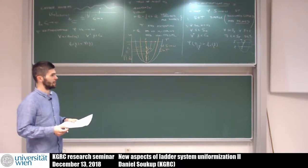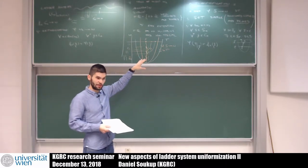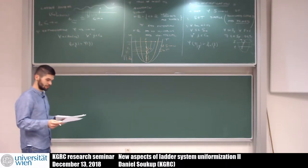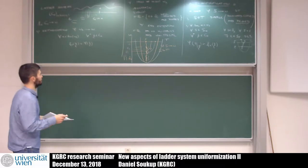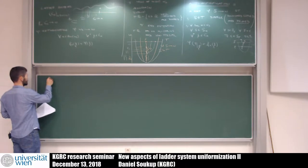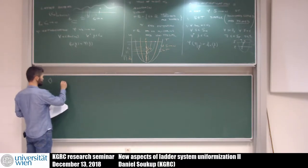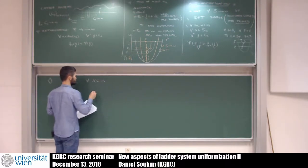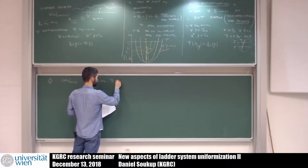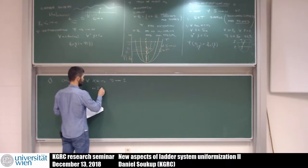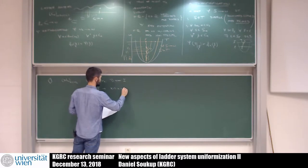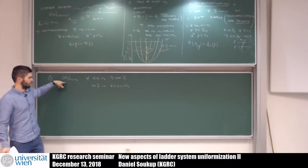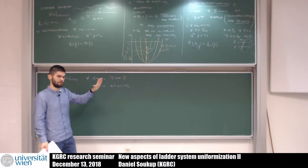I'm going to state some results which say that under certain assumptions we have colorings which don't even have these weak uniformizations, and then state theorems which say that in some situations you do have uniformizations — and for both, surprisingly, we're going to use diamonds. Usual diamond says there is a sequence W_alpha such that whenever you take a subset of omega-1, there is a stationary set of alpha where X intersect alpha equals W_alpha.